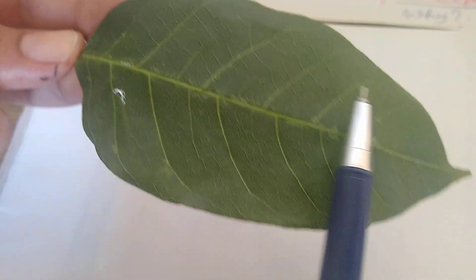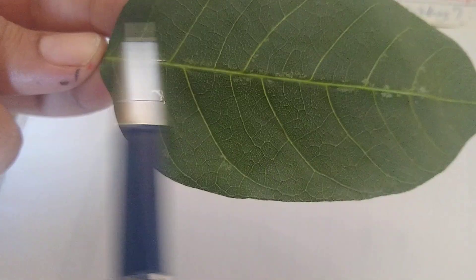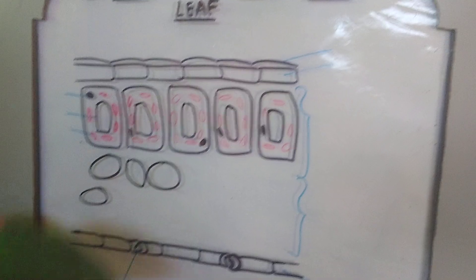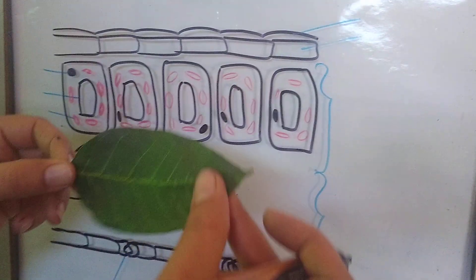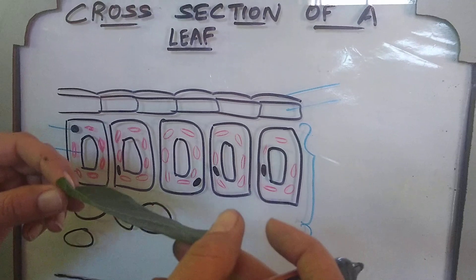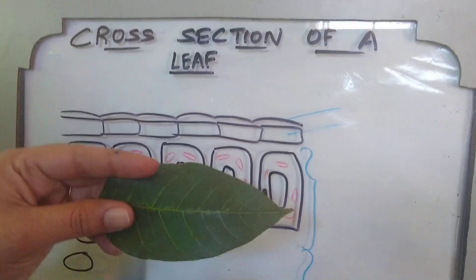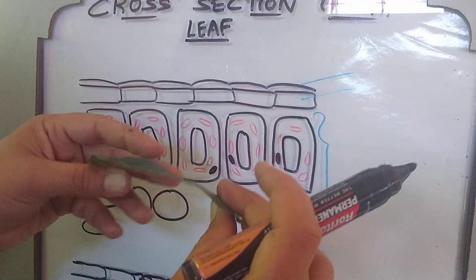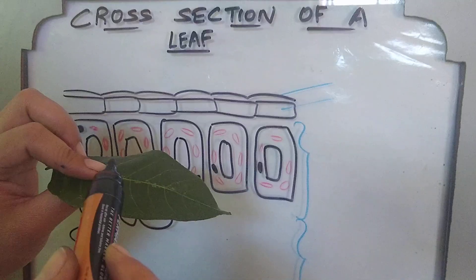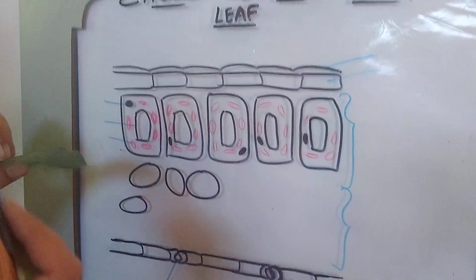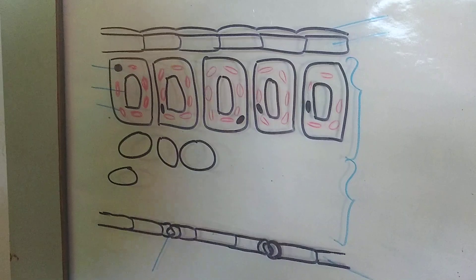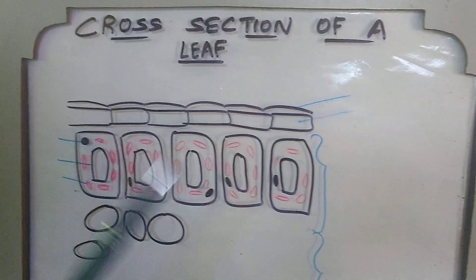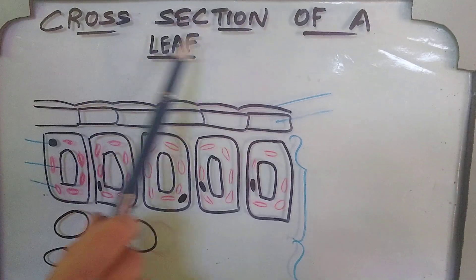The upper surface of the leaf, compared to the lower surface, contains no stomata or only a few stomata in some plants. If we want to study the cells present in this leaf, we have to take a cross-section of the leaf by cutting it in this way, so that we can study the structure of cells present in the leaf as shown in the NCERT diagram.